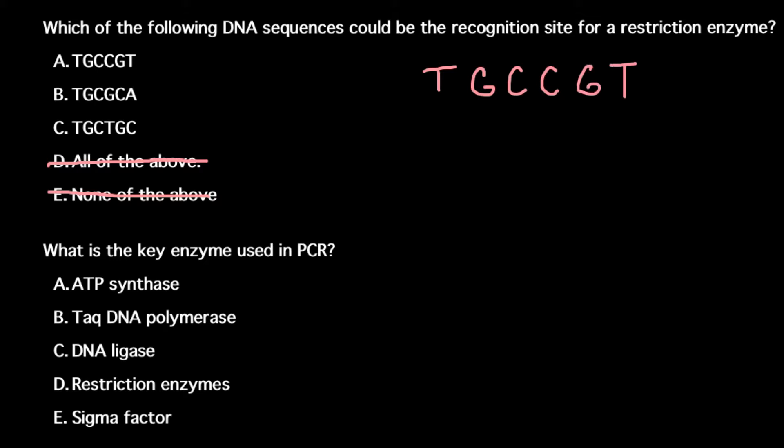In order to find out if this can be a recognition site, we have to build another strand of the DNA. So let this be the 5 prime end and this is the 3 prime end. The other strand's 5 prime end would be here and 3 prime end would be here.